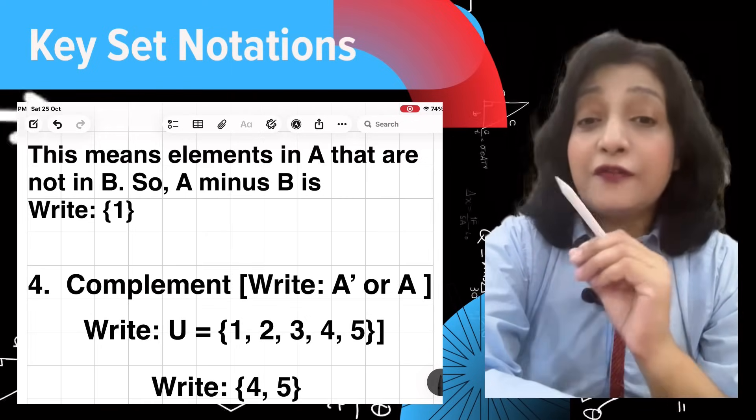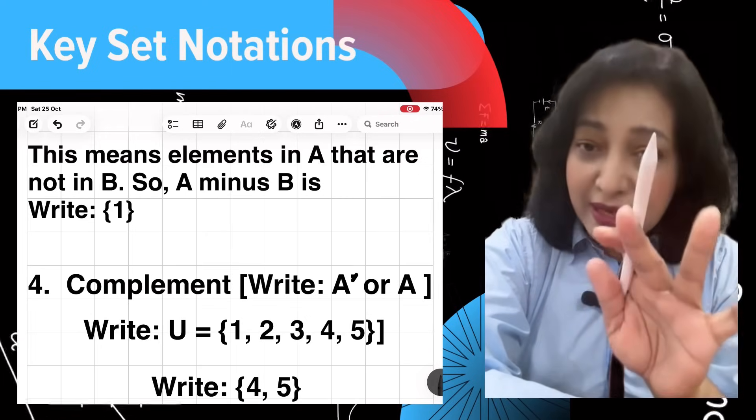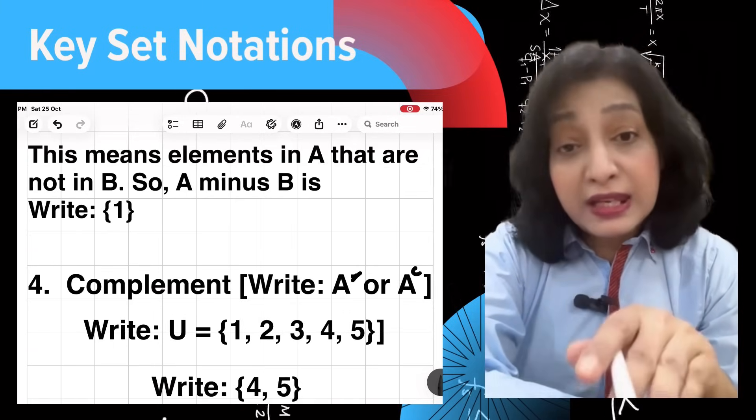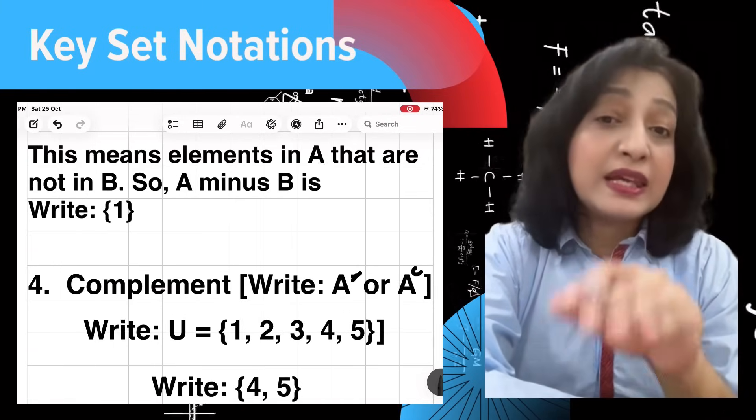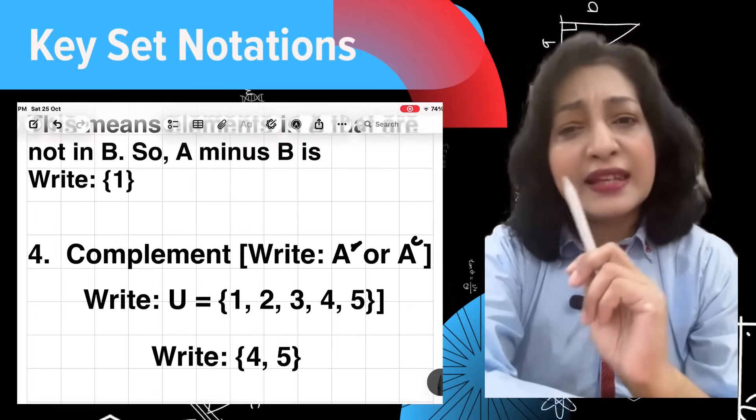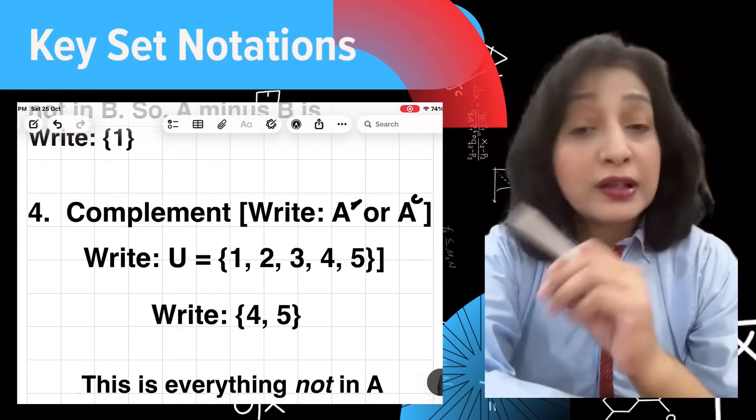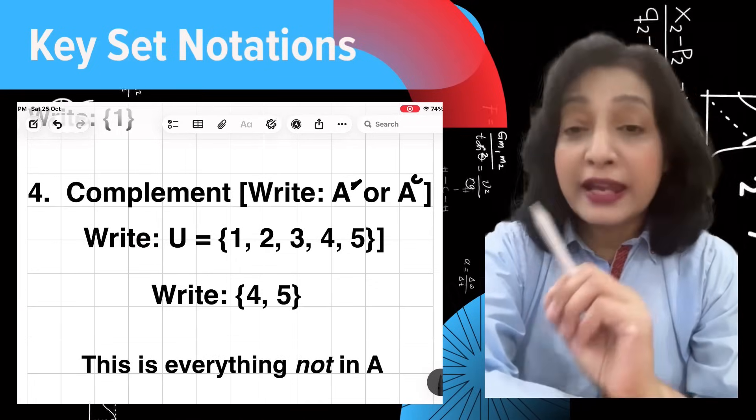Number three is difference: A minus B. This means elements in A that are not in B. So A minus B is {1}, because 1 is in A but not in B. Number four: complement, A' or A complement.